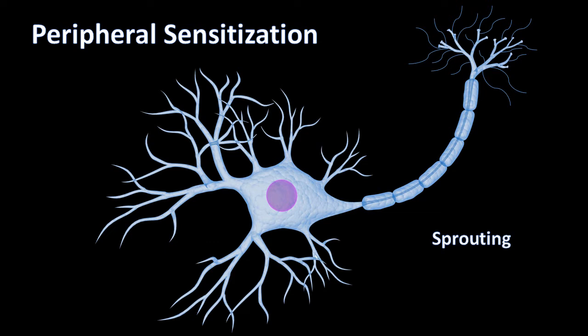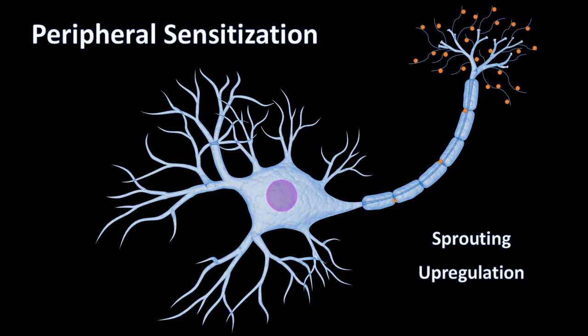Secondly, upregulation of channels such as sodium channels and TRPV1 channels occurs, lowering the threshold of the nerve. The stimulation required to cause an action potential is decreased, and stimulation which did not cause pain will start to feel painful — such as warm temperature or light touch.